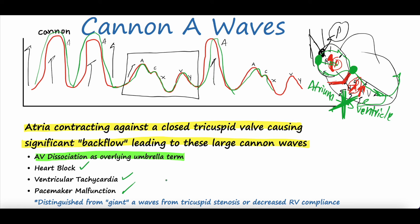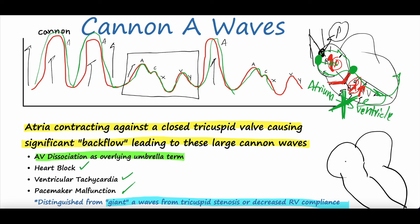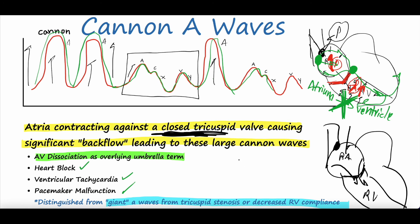The key here is that Canon A-waves are distinctly different from giant A-waves, which we might cover in a future video. Giant A-waves are when the atrium contracts and the tricuspid valve does open, but you still get these giant waves because there might be stenosis of the tricuspid valve making it harder to pump blood through, which increases the pressure seen by the central venous catheter. Or it might be because the RV has decreased compliance and can't expand as easily. Those are called giant A-waves — different from Canon A-waves, which are when the right atrium is pumping against a closed tricuspid valve, not just a stenotic one.